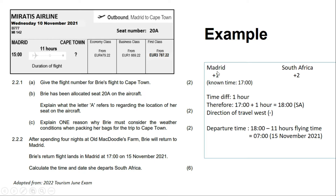We identify the time zones: Madrid is +1 and South Africa is +2. You will never be expected to know these off by heart — you will always be given a time zone map. Our known time is 17:00. Remember, the only acceptable format when dealing with time zones is the 24-hour clock. The time difference is one hour, so in South Africa it is 18:00 when it is 17:00 in Madrid.